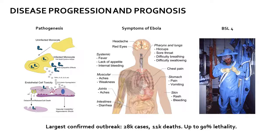Decreased liver and kidney function, increased internal and external bleeding, low blood pressure, and dehydration are typically the last stage of infection. The largest confirmed outbreak involves 28,000 cases and 11,000 deaths.